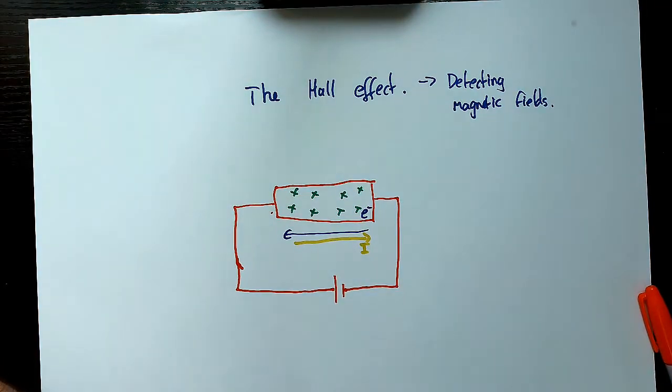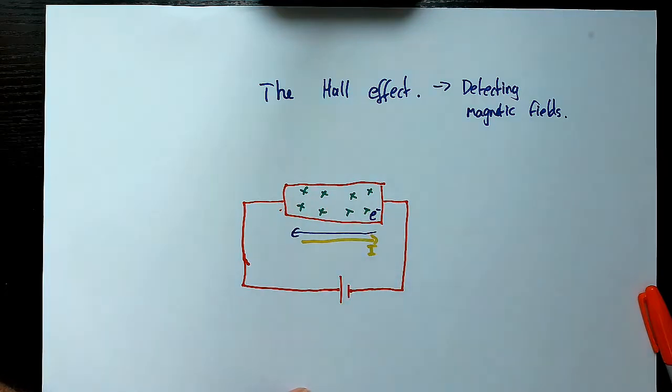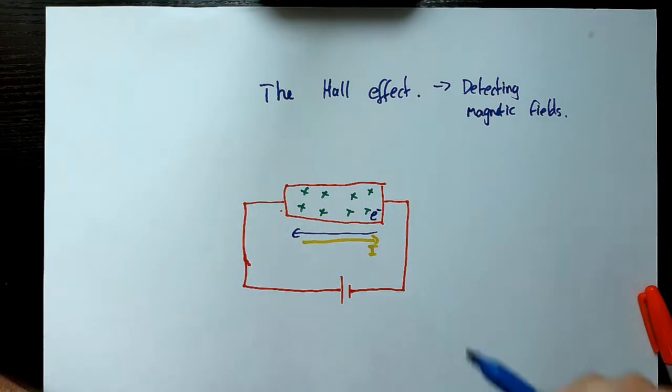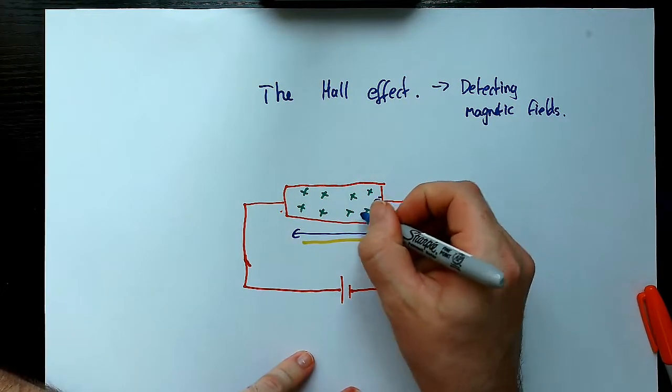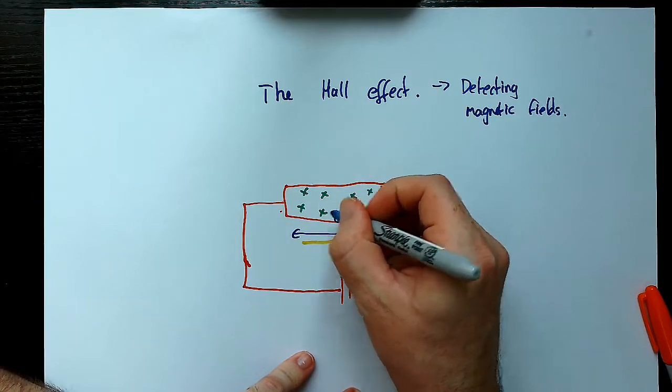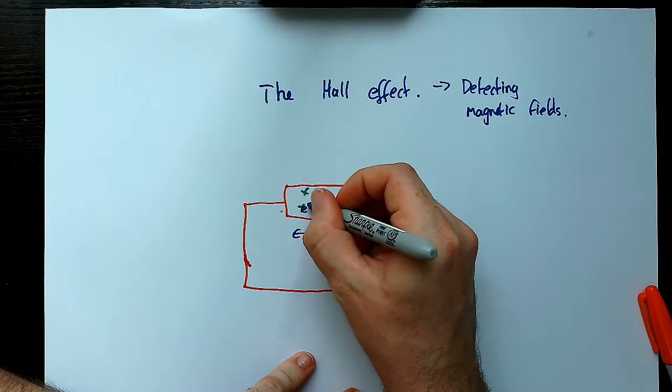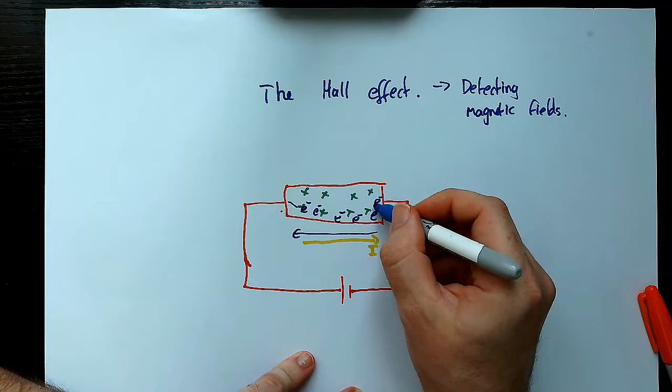And what then happens is that we would expect there to be a force on these electrons as they move across this gap. And the nature of that is that it causes the electrons to deviate kind of in a path like this.